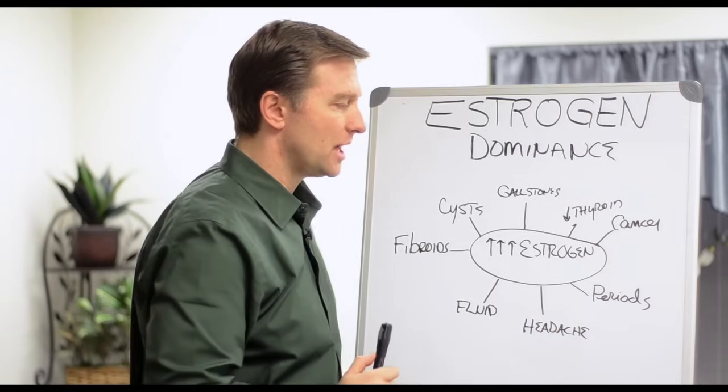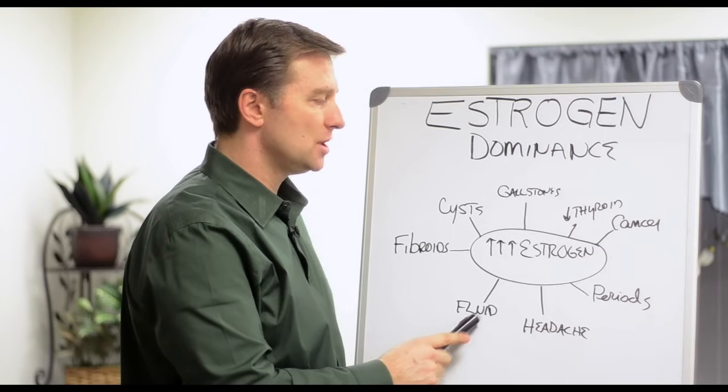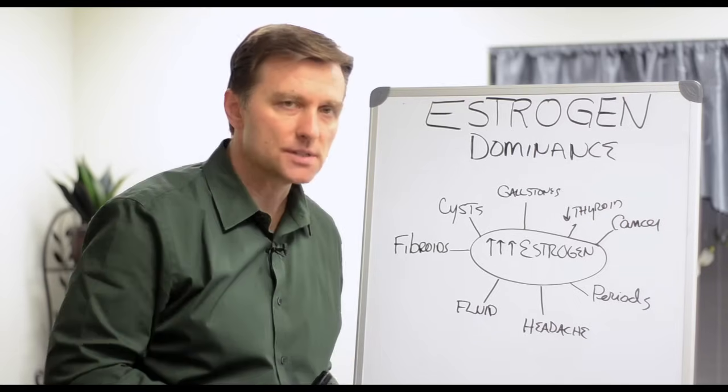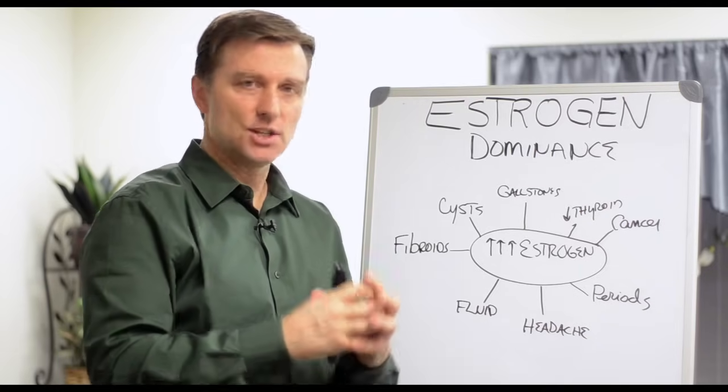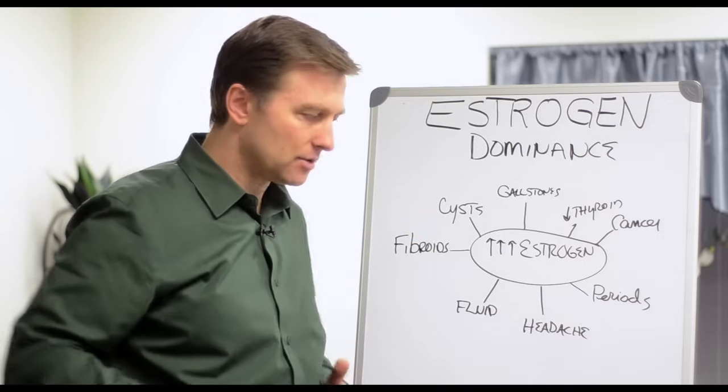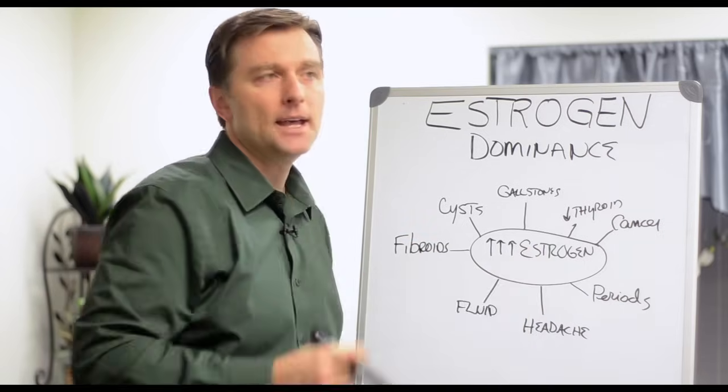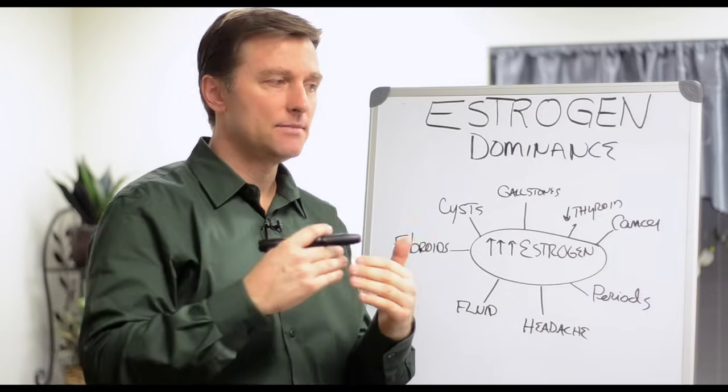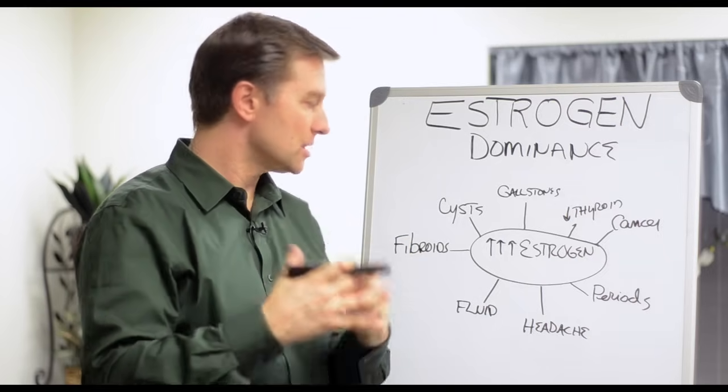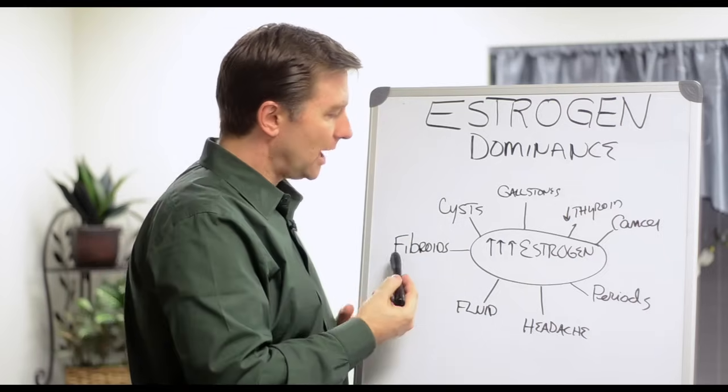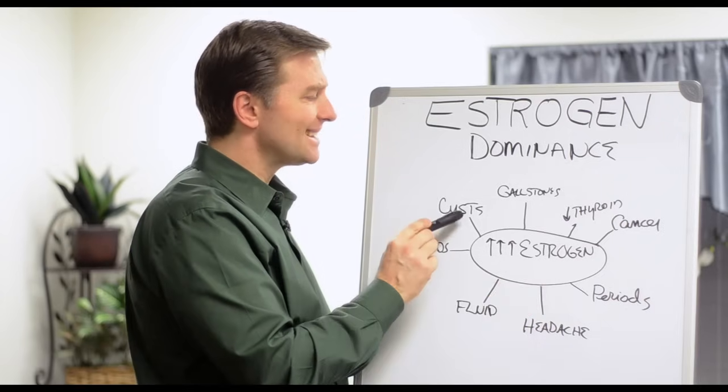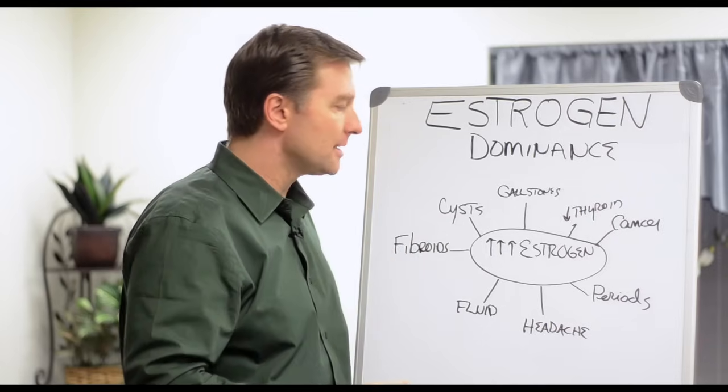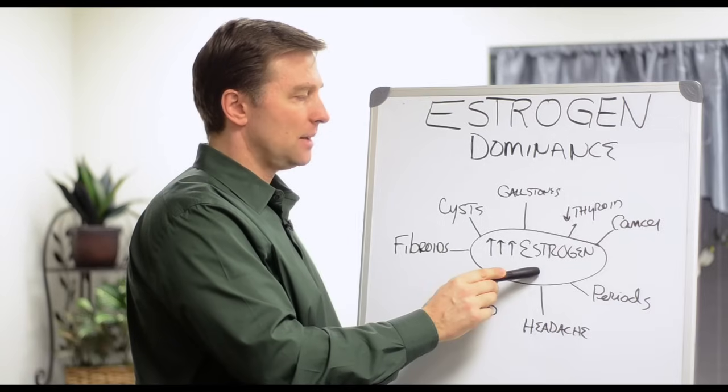Headaches come from too much estrogen. Fluid retention can come from estrogen dominance. Fibroids, endometriosis, which is extra growth of tissue in the female cavity, can come from estrogen dominance as well. And because, remember, we talked about DNA. DNA, it affects the blueprints. It makes tissue grow. It increases the size of different things. So fibroids definitely come from estrogen dominance. Cysts come from estrogen dominance, and you can have cysts in the ovaries. You can have it on the breast.